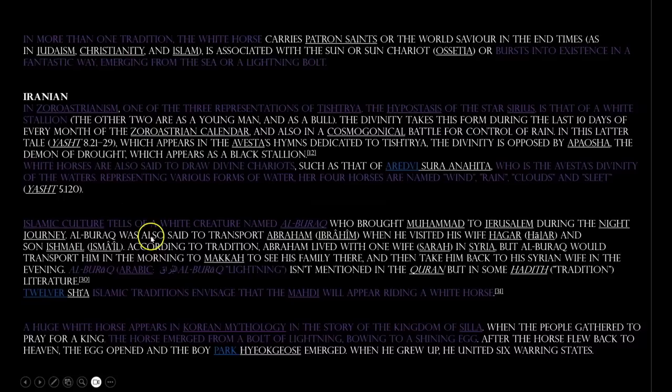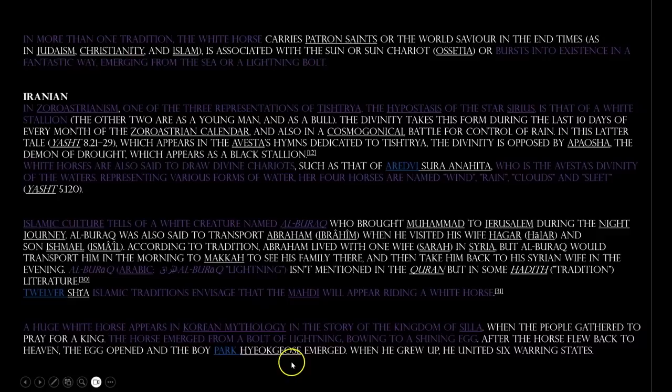So I will quote here regarding the meaning of the white horse across many different religions and mythological texts. In more than one tradition, the white horse bursts into existence in a fantastic way, emerging from the sea or a lightning bolt. In Zoroastrianism, one of the three representations of Tishthira, the hypostasis of the star Sirius, is that of a white stallion. White horses are also said to draw divine chariots, who is the Avestas divinity of the waters, representing various forms of water. Her four horses are named wind, rain, clouds, and sleet. Islamic culture tells of a white creature named Al-Burak. Al-Burak means lightning in Arabic.